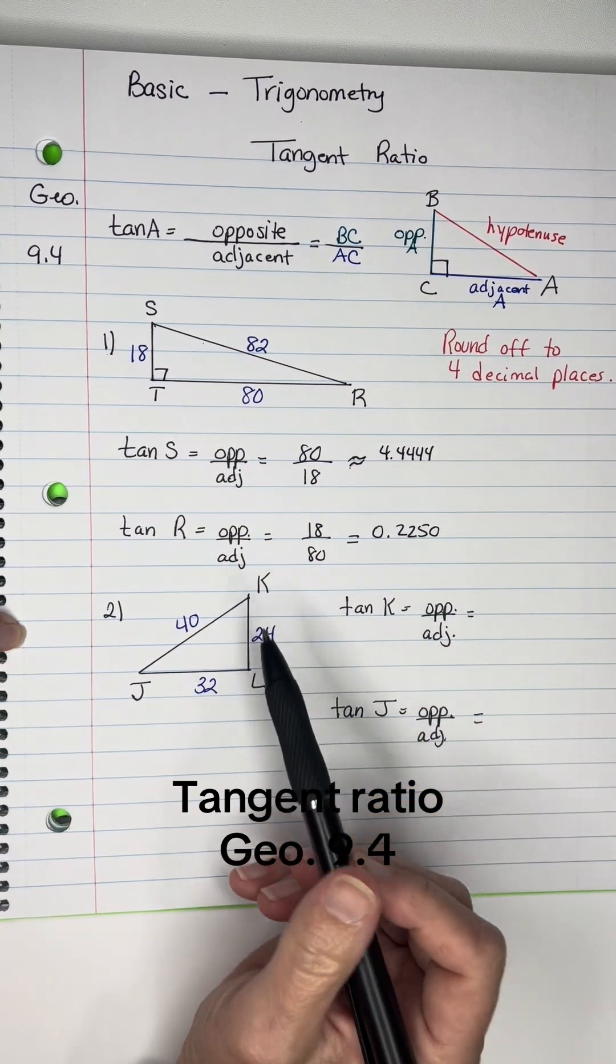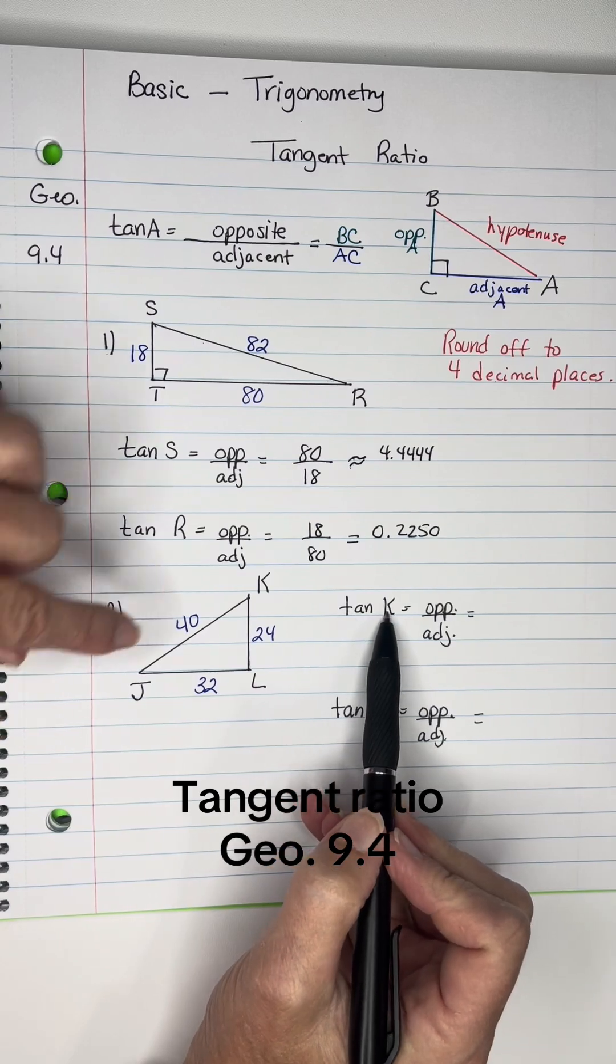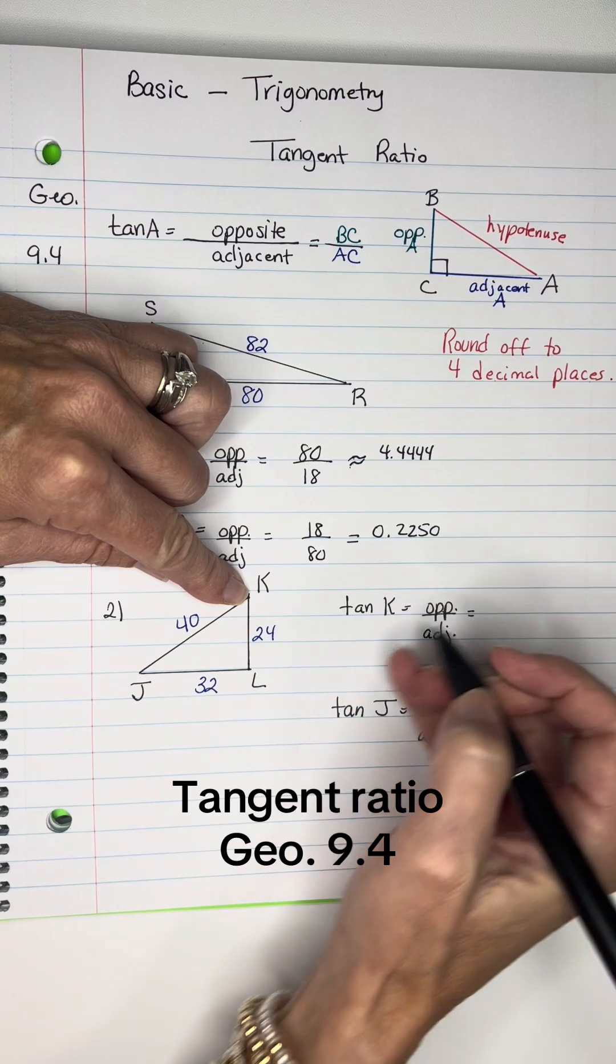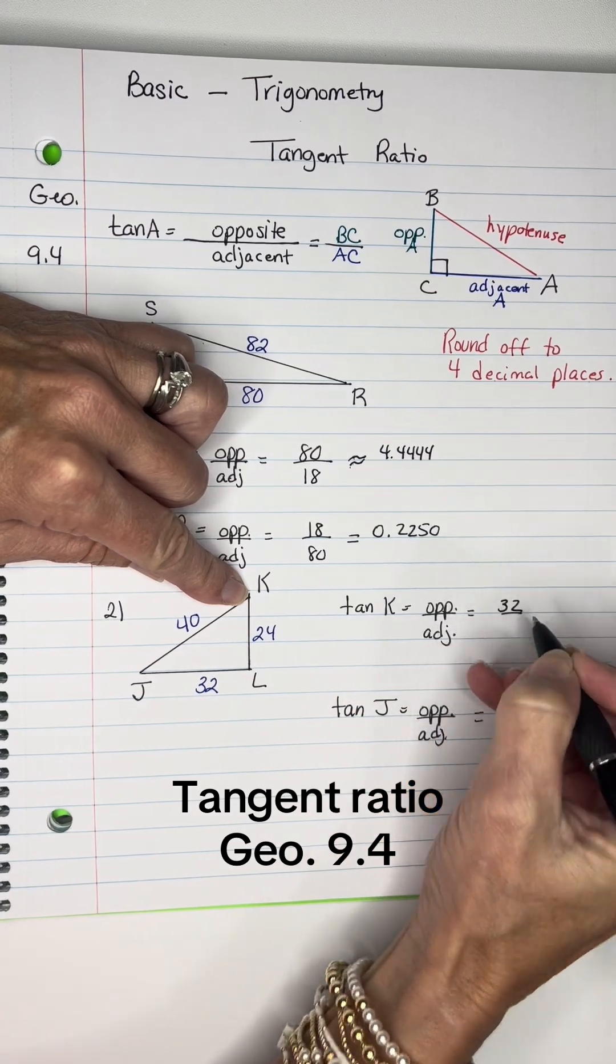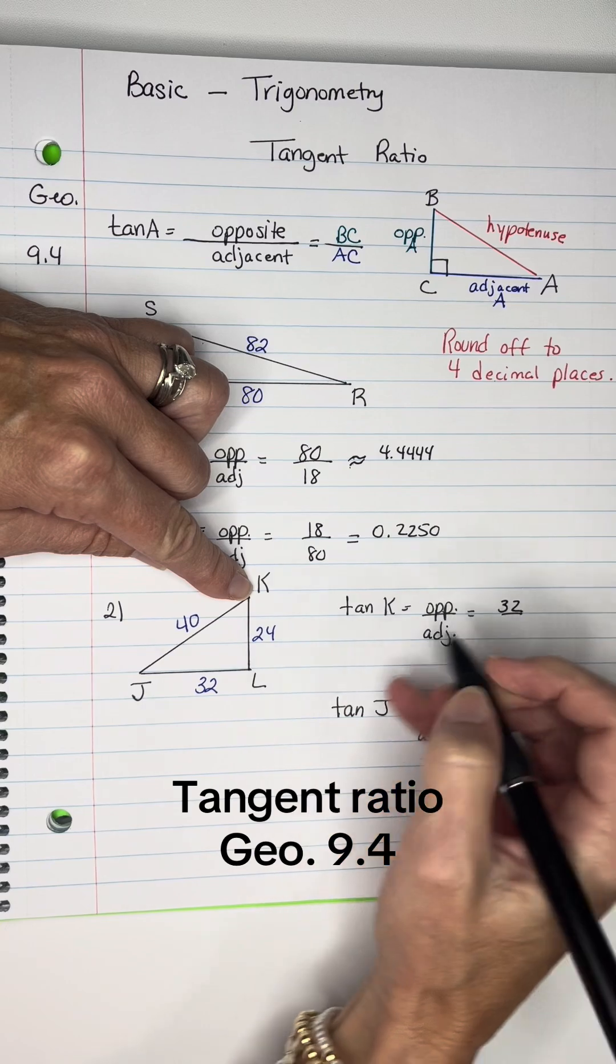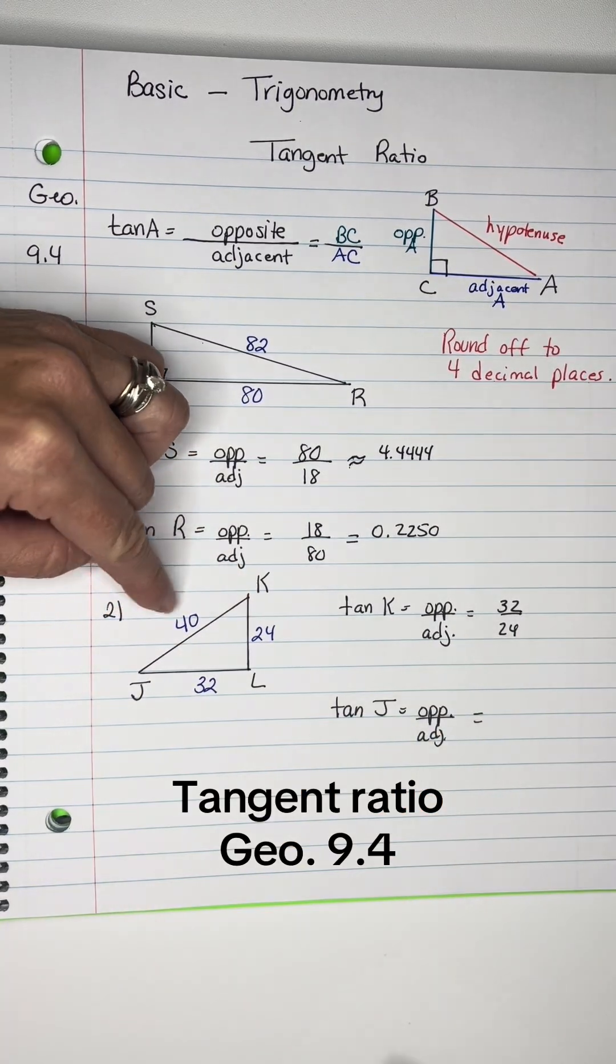Now let's look at this triangle. For tangent of K, the opposite leg is 32 and the adjacent leg is 24. Make sure not to use the hypotenuse.